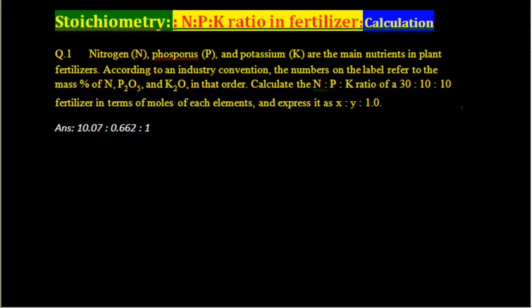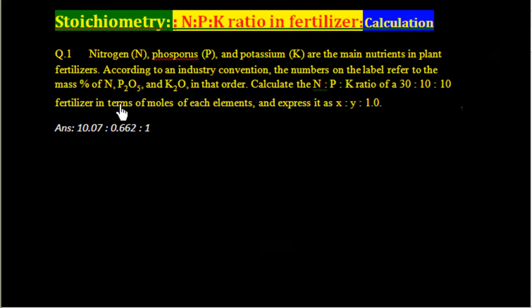This problem illustrates the concept of Nitrogen, Phosphorus, and Potassium ratio in a fertilizer. Nitrogen, Phosphorus, and Potassium are the main nutrients in plant fertilizer. According to an industry convention, the label numbers refer to the mass percentage of Nitrogen, P₂O₅, and K₂O in that order. Calculate the N:P:K ratio of a 30-10-10 fertilizer in terms of moles of each element and express it as X-Y-1.